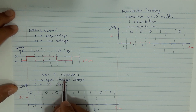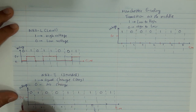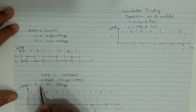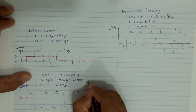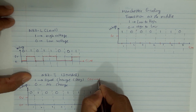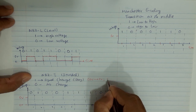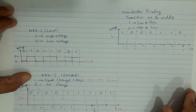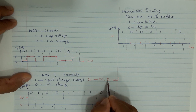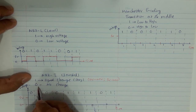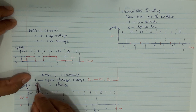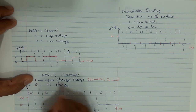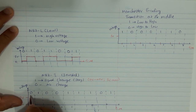For NRZ-I (Inverted), the way we represent bits is different. To represent bit 1, there should be a signal transition — a signal change. For example, if I am at 0 voltage it should go to 5, or if I am at 5 voltage I go to 0. Either low-to-high or high-to-low — any change represents 1. For 0, there is no change; the previous state continues.